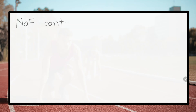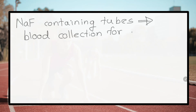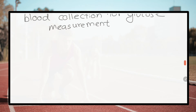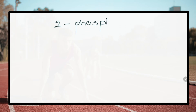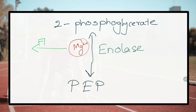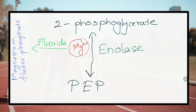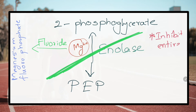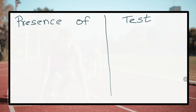Why are sodium fluoride containing tubes used in laboratory for blood collection for glucose measurement? Because fluoride is a potent inhibitor of the enolase enzyme, which inhibits the entire glycolytic process, so glucose in the blood sample is not utilized until it is tested.